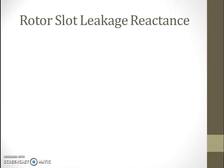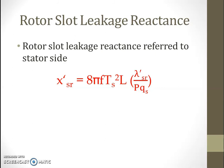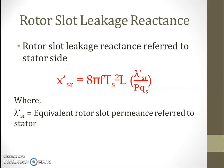Similarly, rotor slot leakage reactance referred to the stator side (denoted with a dash) has an almost similar equation: 8·pi·f·Ts²·L·lambda'_sr / (p·qs), where lambda'_sr is the equivalent rotor slot permeance referred to the stator, p is number of poles, and qs is number of stator slots per pole per phase.